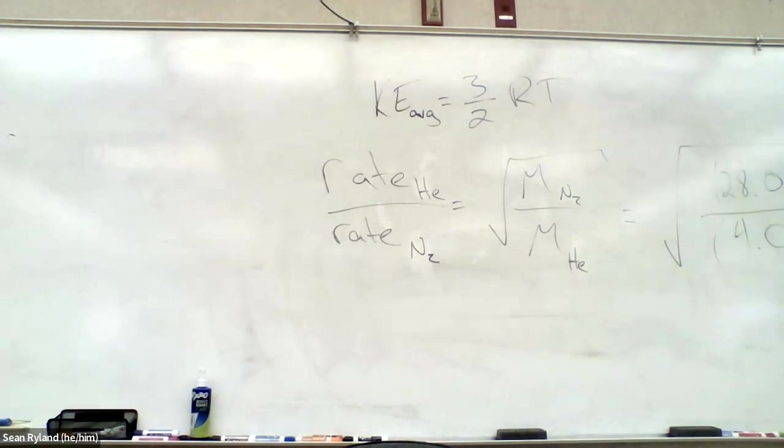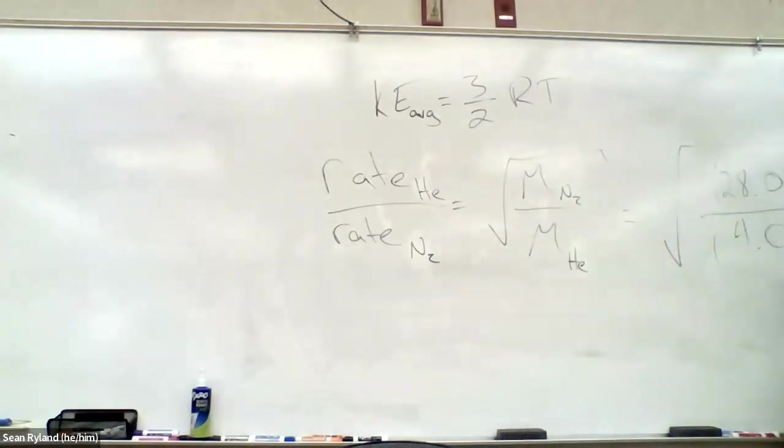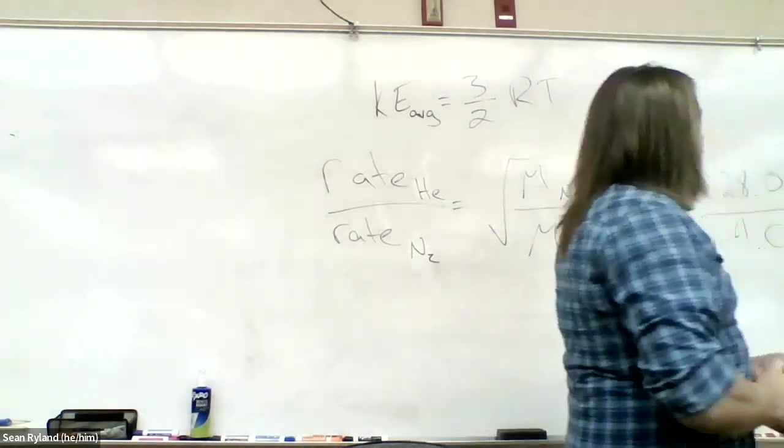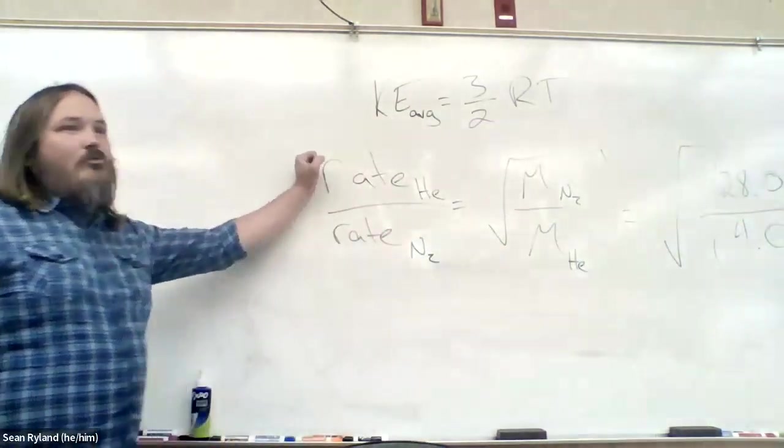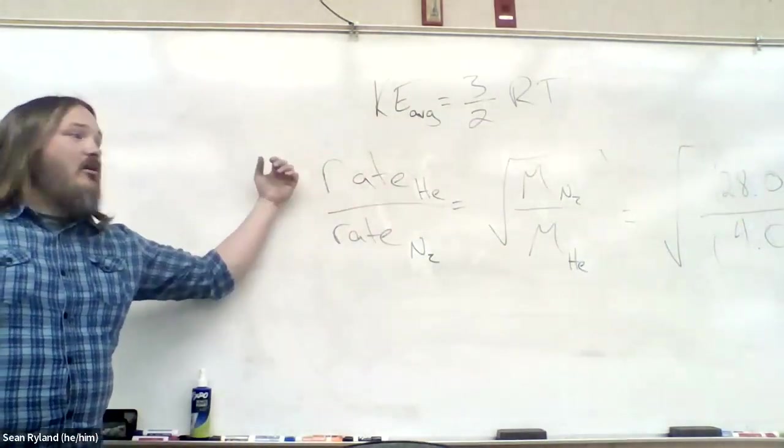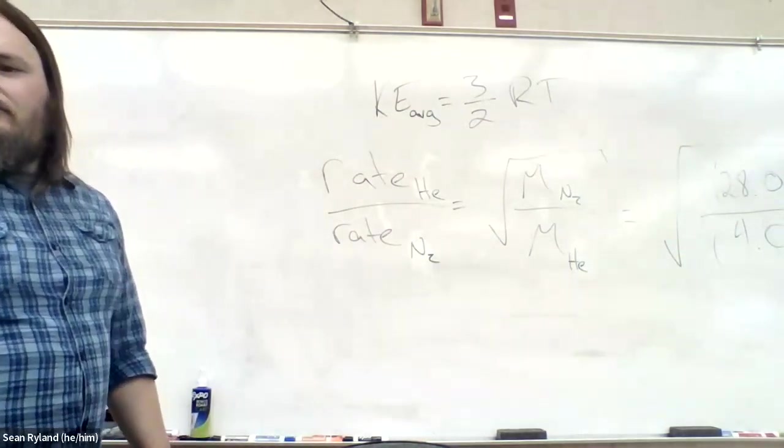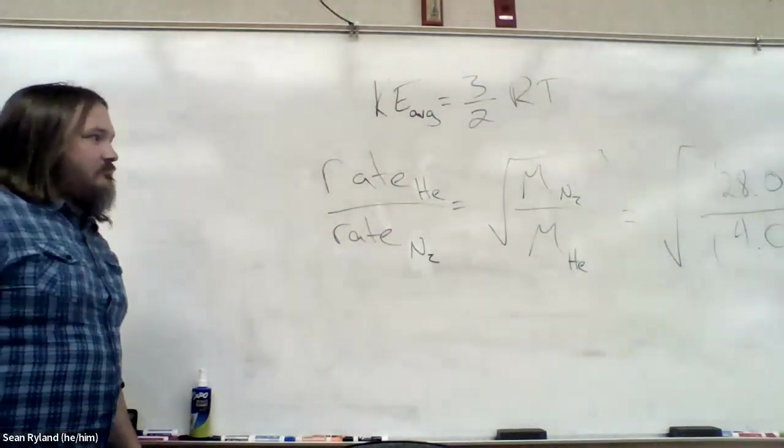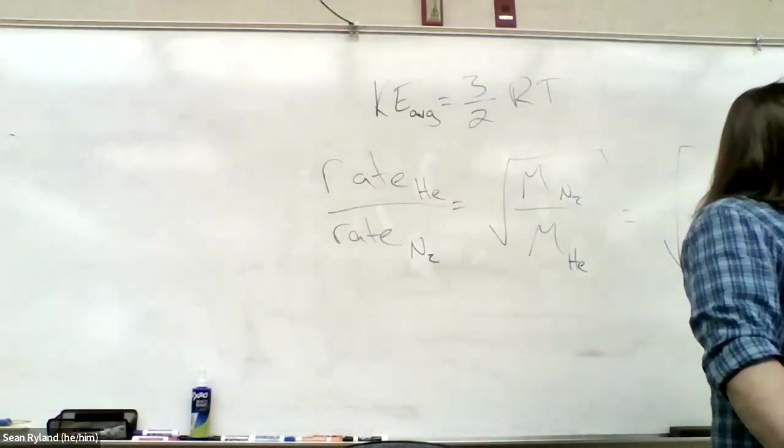What do we actually get for the number? 2.65. So what does that number actually mean? It means that the helium will move through any barrier about 2.6 times faster than nitrogen does.